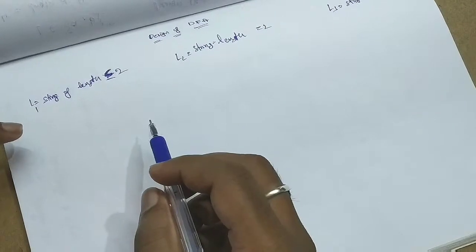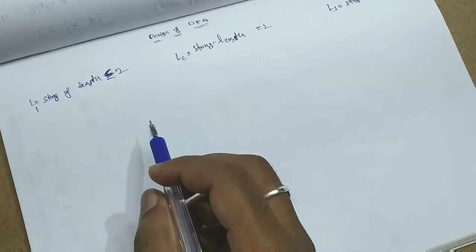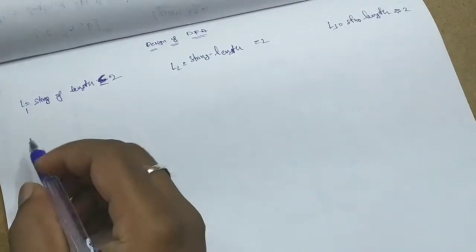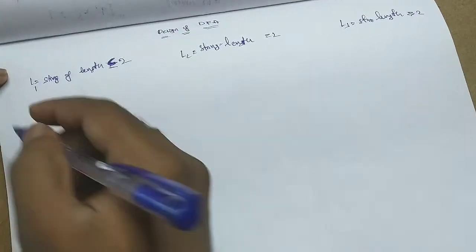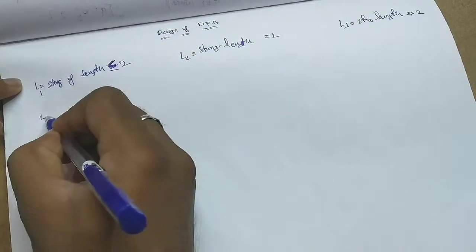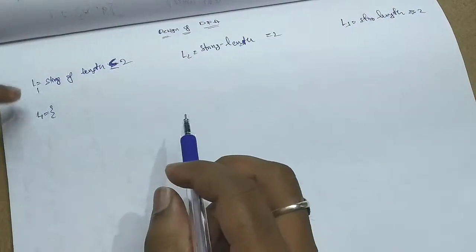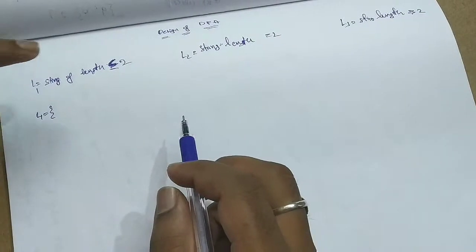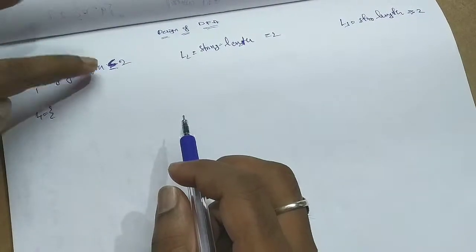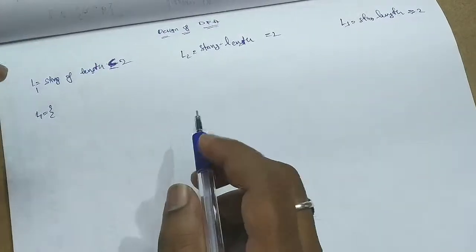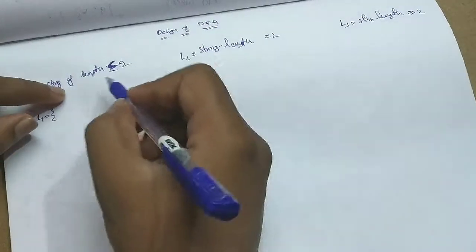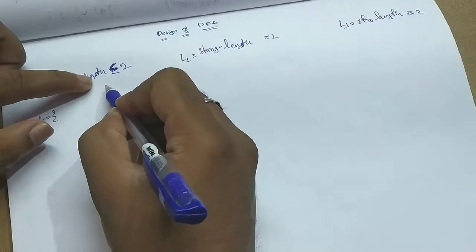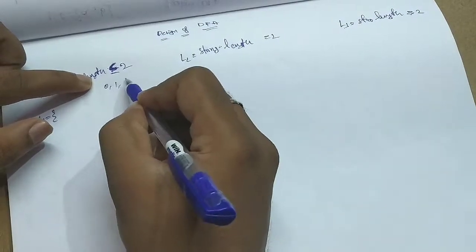If at all you are designing a DFS, what is the first step? You have to derive the strings of the language. Only the strings in this particular language are derived. String length less than or equal to 2 — so I'll choose length 0, length 1, and length 2.